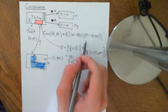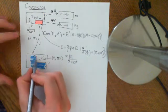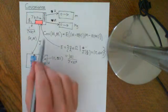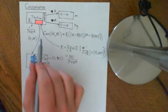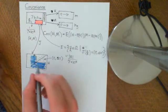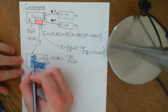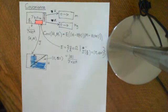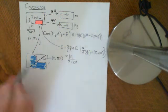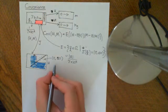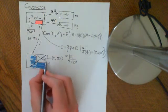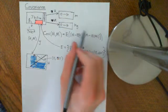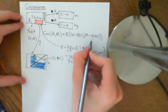What this covariance is going to do is measure how positively correlated the two variables are. Correlation is a modified version of this, but in a sense, covariance works out whether they are positively correlated — as H gets bigger, M gets bigger as well — or whether they are negatively correlated, meaning as H gets bigger, M gets smaller, which would look like a downward-sloping line. I want to give you some intuition for why this formula measures that.